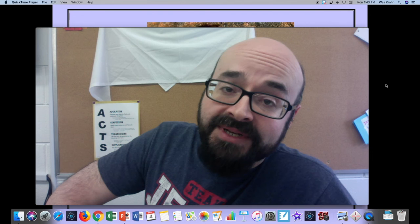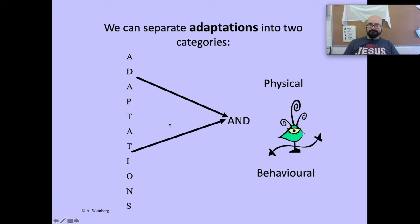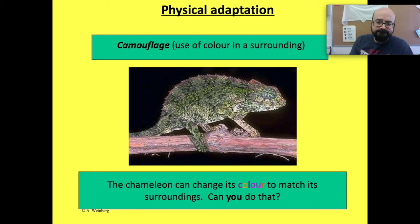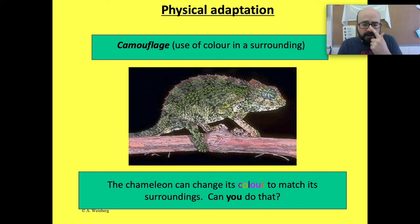Welcome to Science with Wes. Today we're going to be talking about a bit online and just going through the slides. Looking at the picture here — our first physical adaptation we're going to look at is camouflage, the use of color in a surrounding. The picture on screen right now is a chameleon. I almost said gecko.